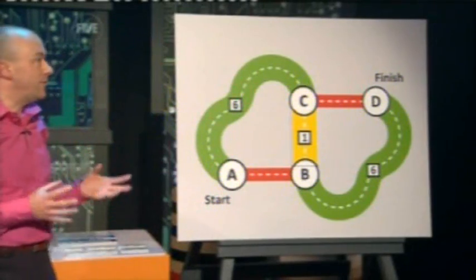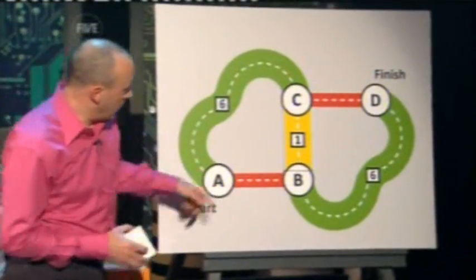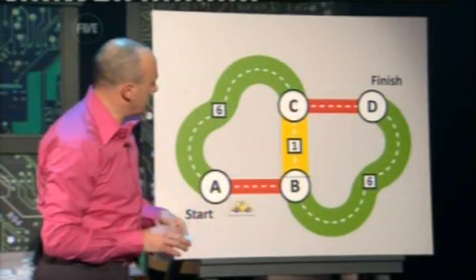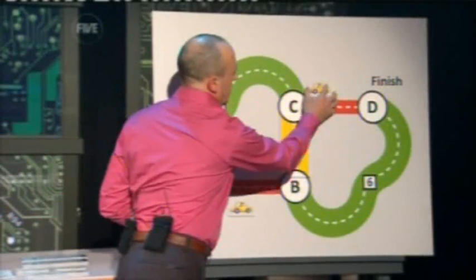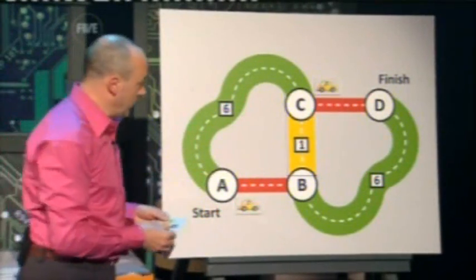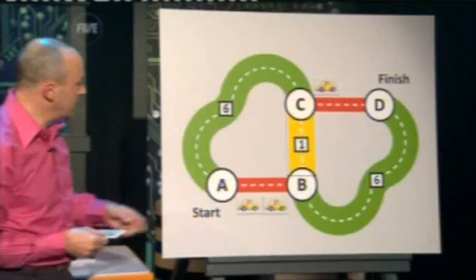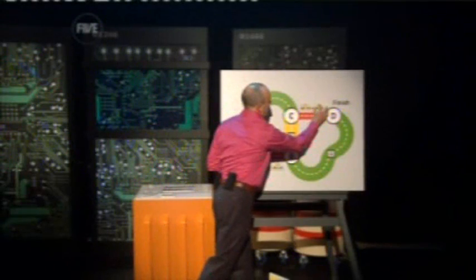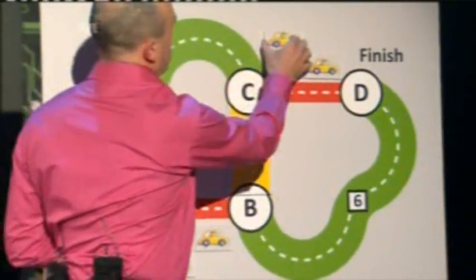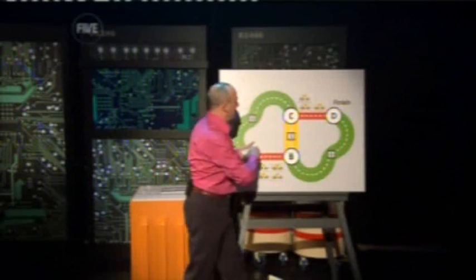Let's see what happens if four cars try to get from A to D. The first car goes from A to B along the red road — one minute — up the yellow road — one minute — and along the second red road — one minute — three minutes total. The next car follows the same route, but now each red road takes two minutes because it's congested. The third and fourth cars also prefer this same route, going along the red road, across the yellow road, and along the second red road.